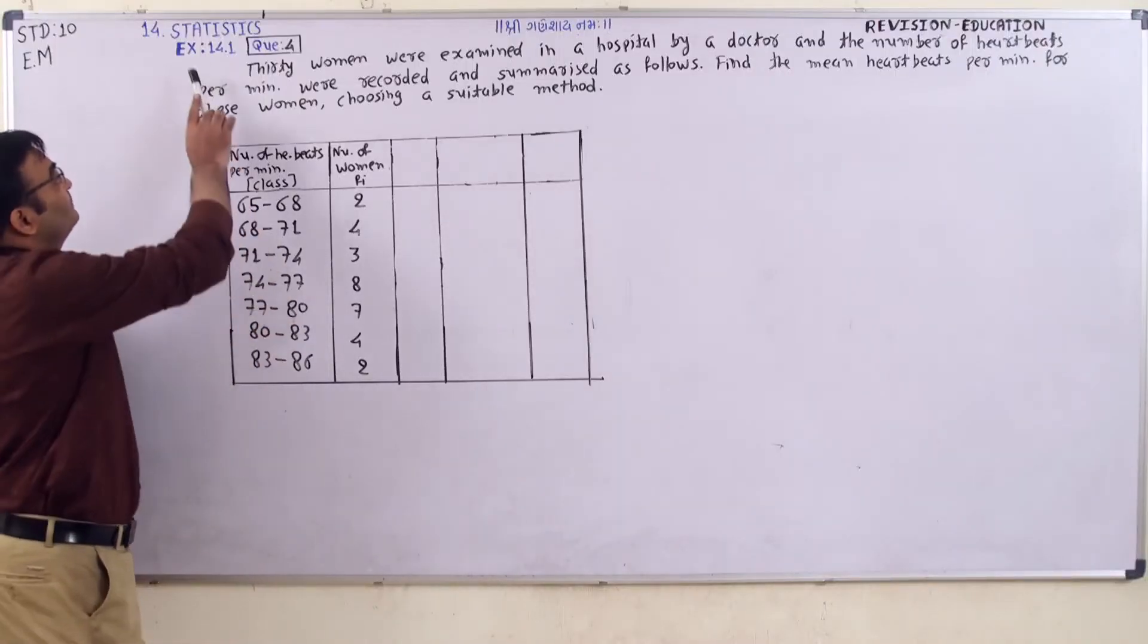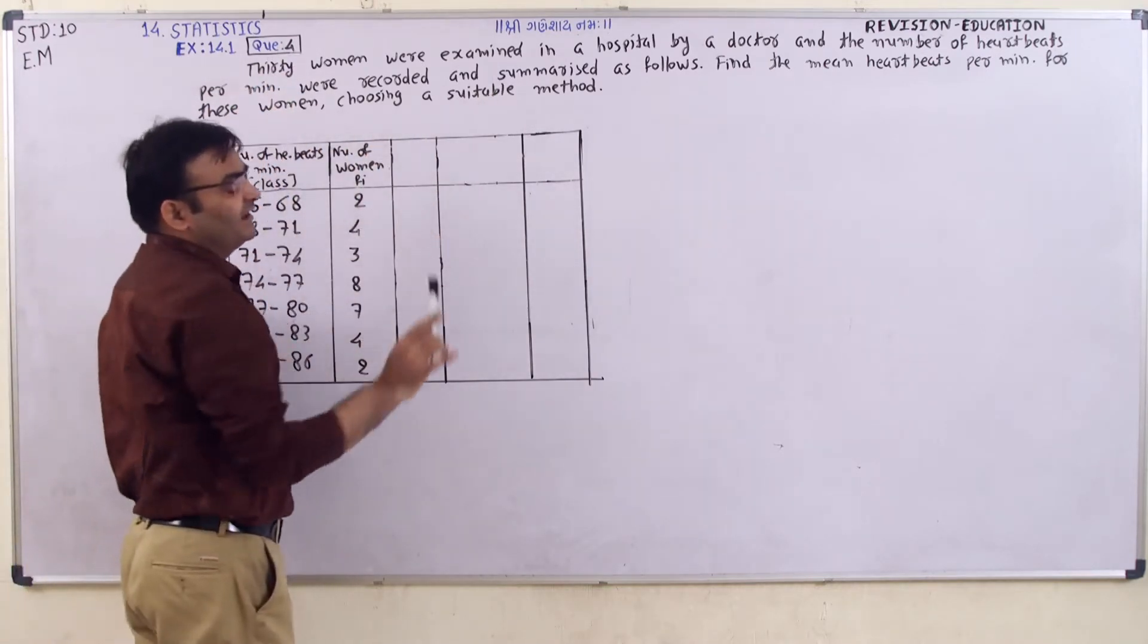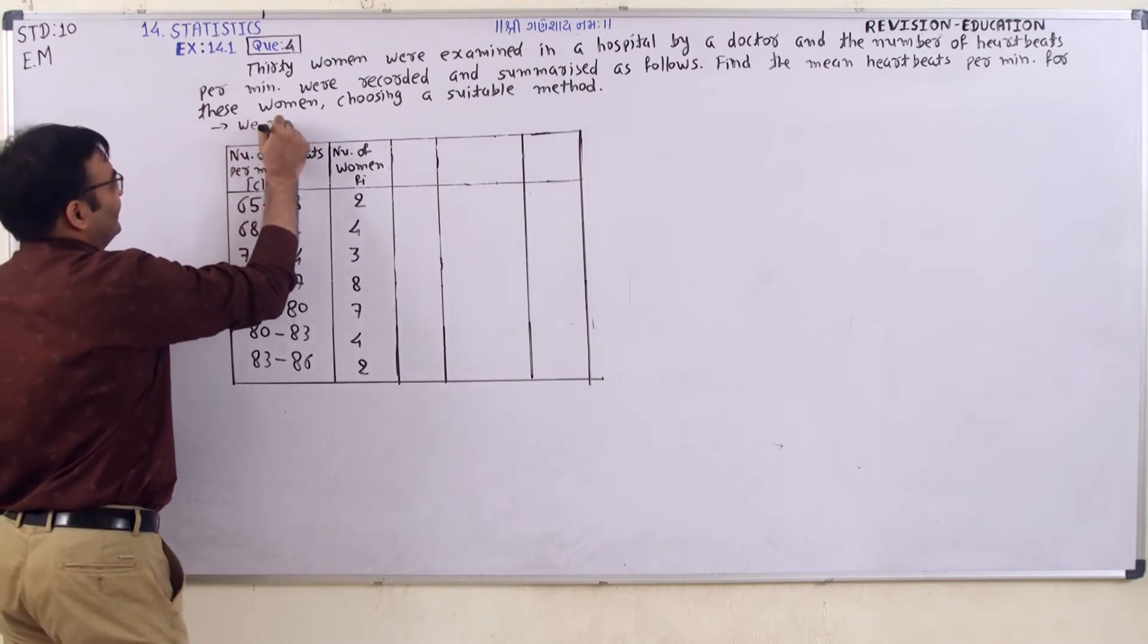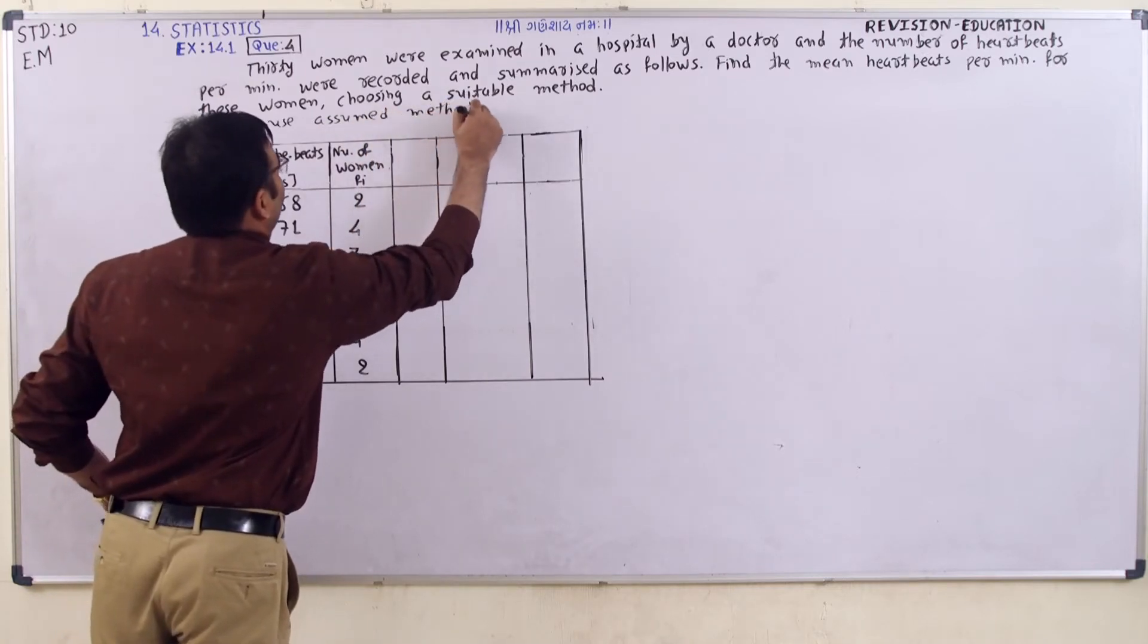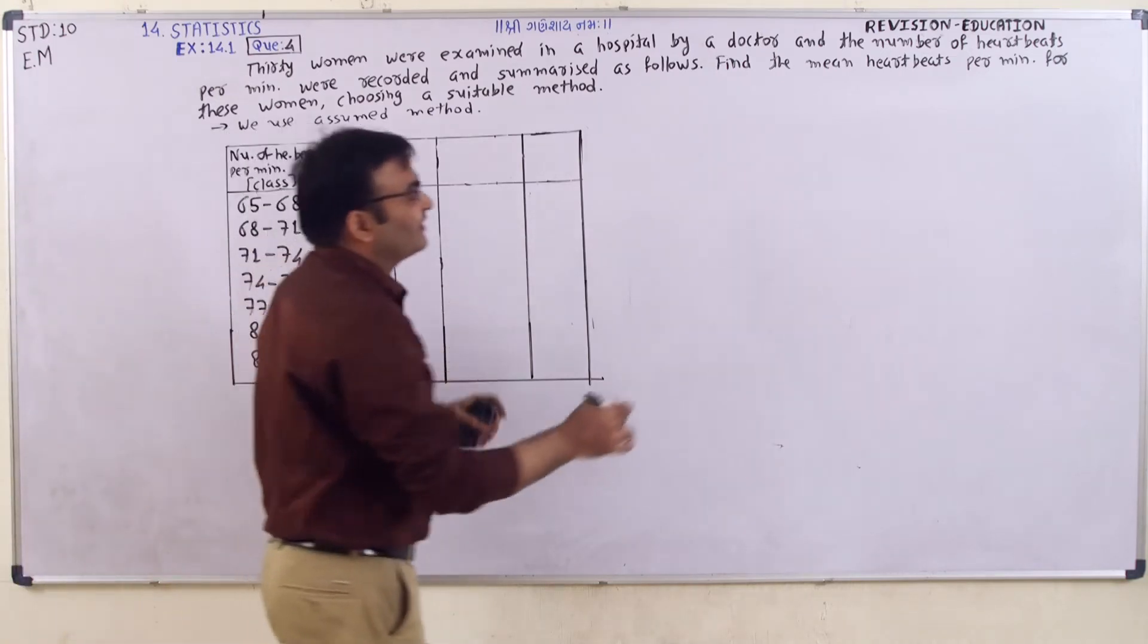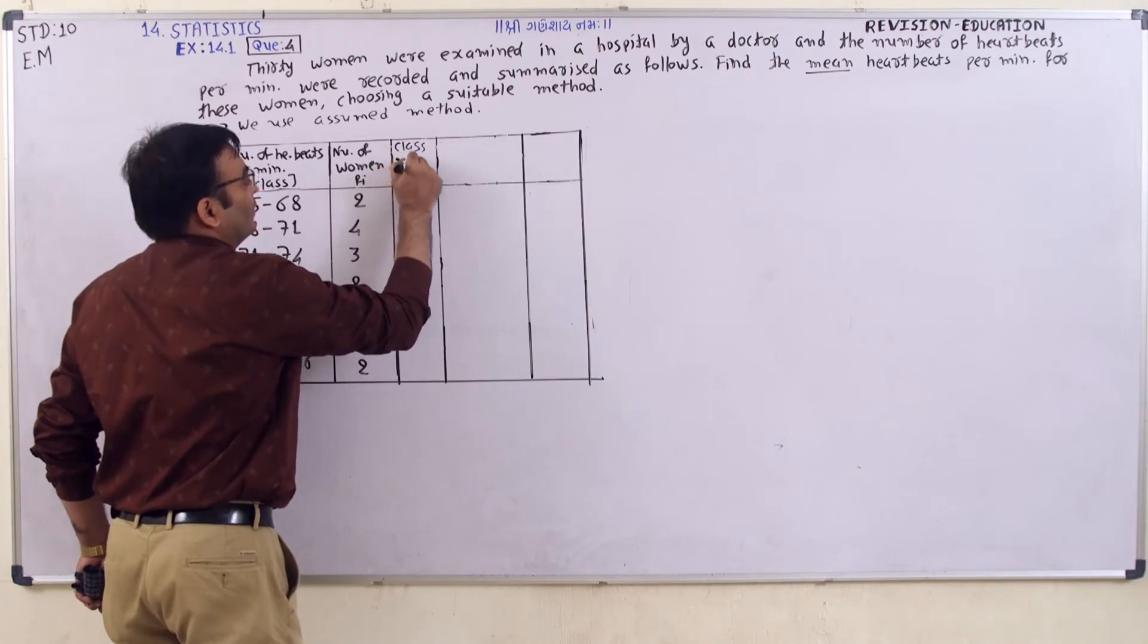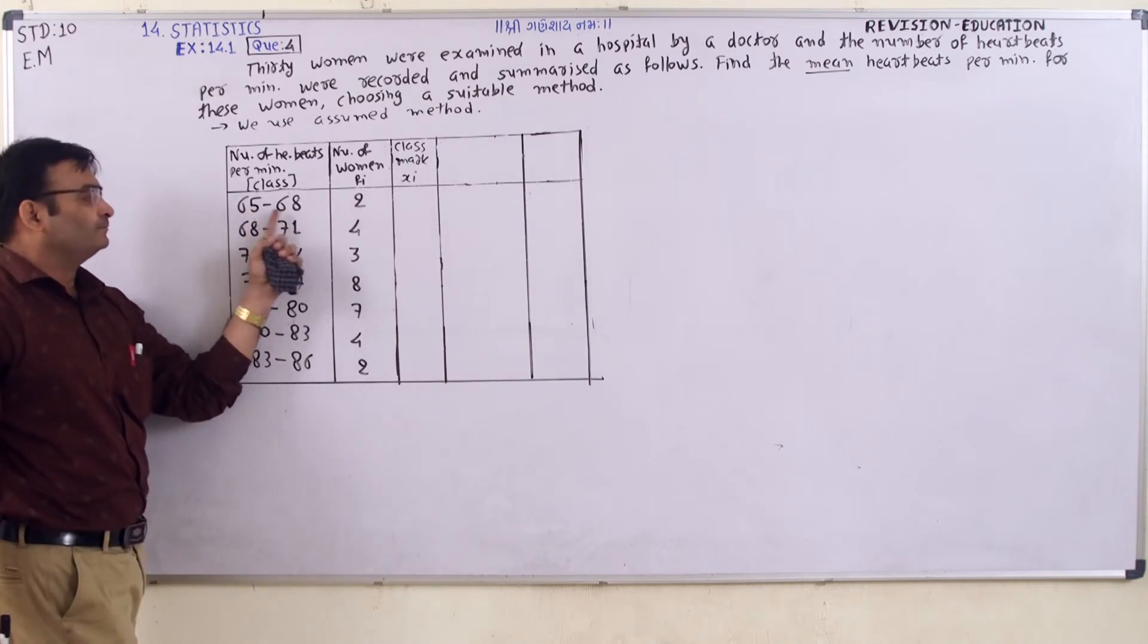Let's friend, exercise 14.1 and it's question number 4. To find the mean, we think the suitable method. We can use any method here, but we use assumed mean method. Now, what do you want to find? You must find mid-value or class mark. It's called xi. How can we find it? Do addition of these two and divide by 2.